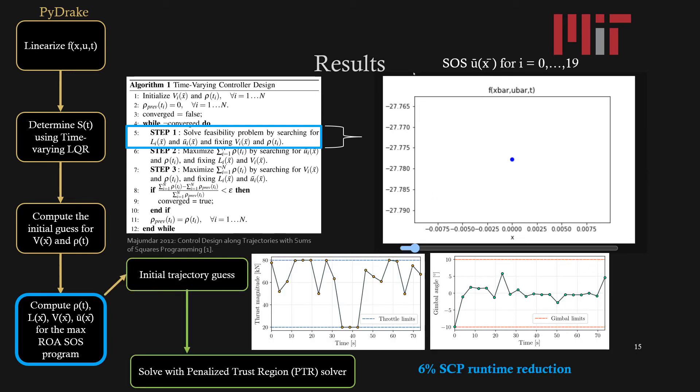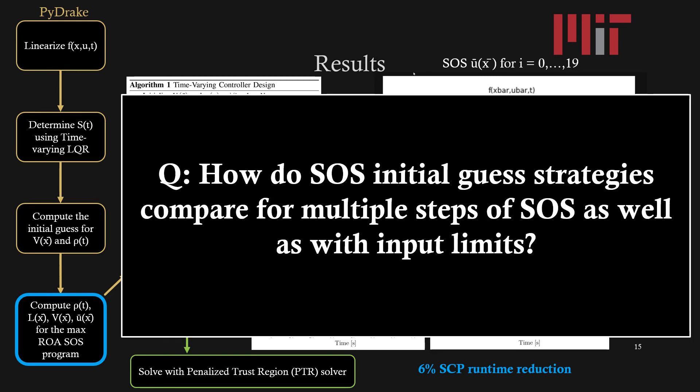After plugging this result into the initial trajectory guess for the SCP solver, I was able to get a solution using penalized trust region. And the final solution resulted in about a 6% SCP runtime reduction.